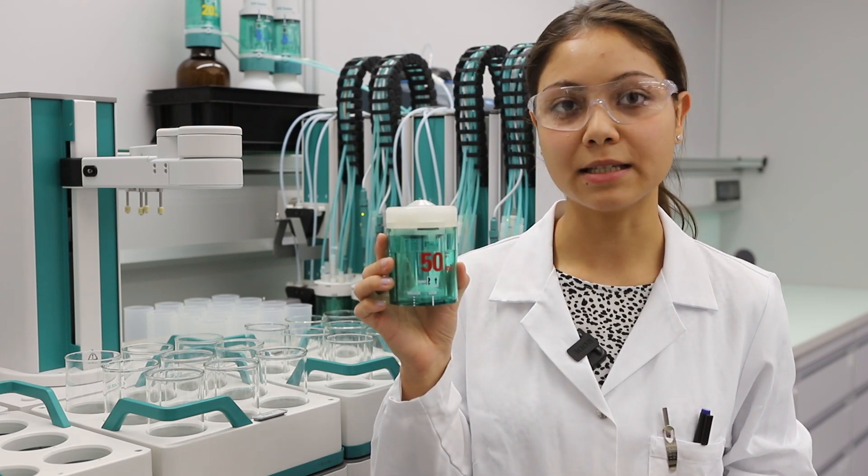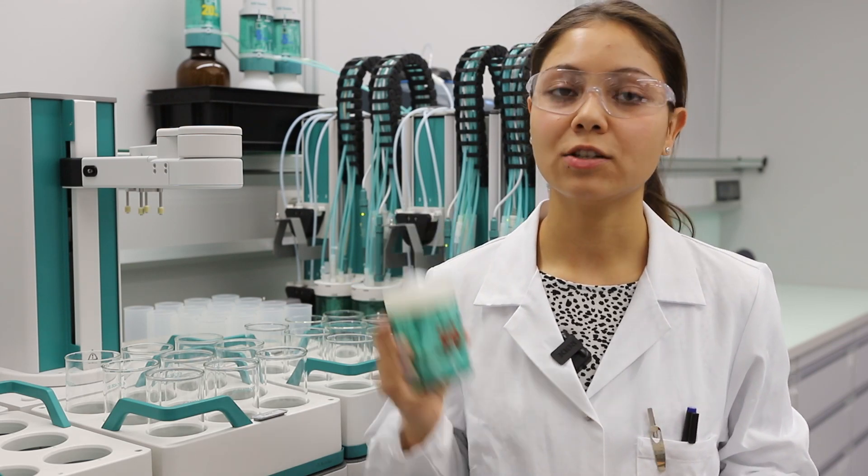Thanks to the automated sample transfer using an Omnis cylinder unit, you can easily just add your sample into the beaker, place it on the rack, and your system will automatically dose the required volume for your determination.